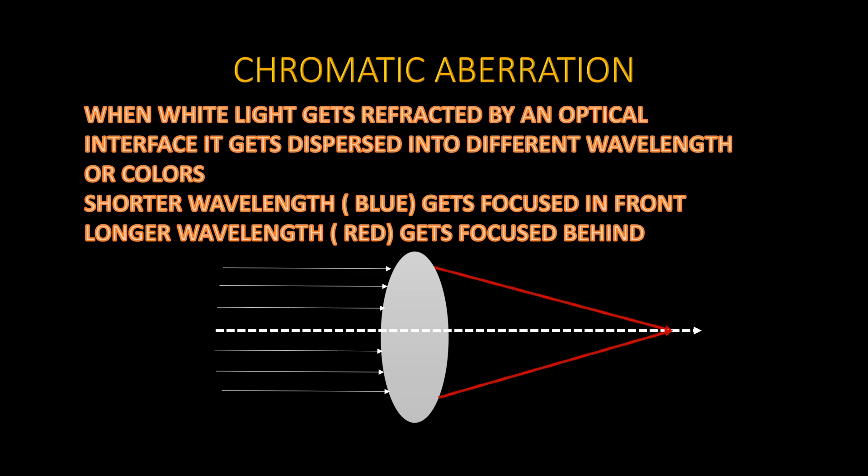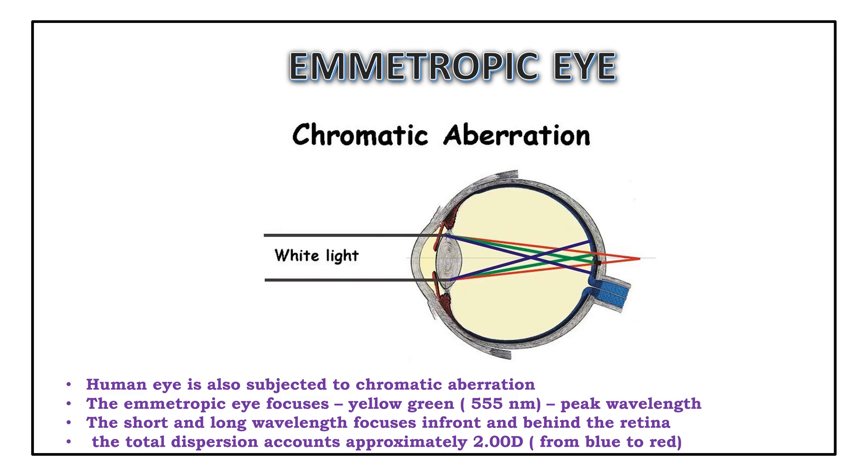The basic principle behind the Duochrome test is chromatic aberration. When white light is refracted by any optical surface, it gets separated into different wavelengths or colors. The shorter wavelengths, like blue, get focused in front, while the longer wavelengths get focused behind.